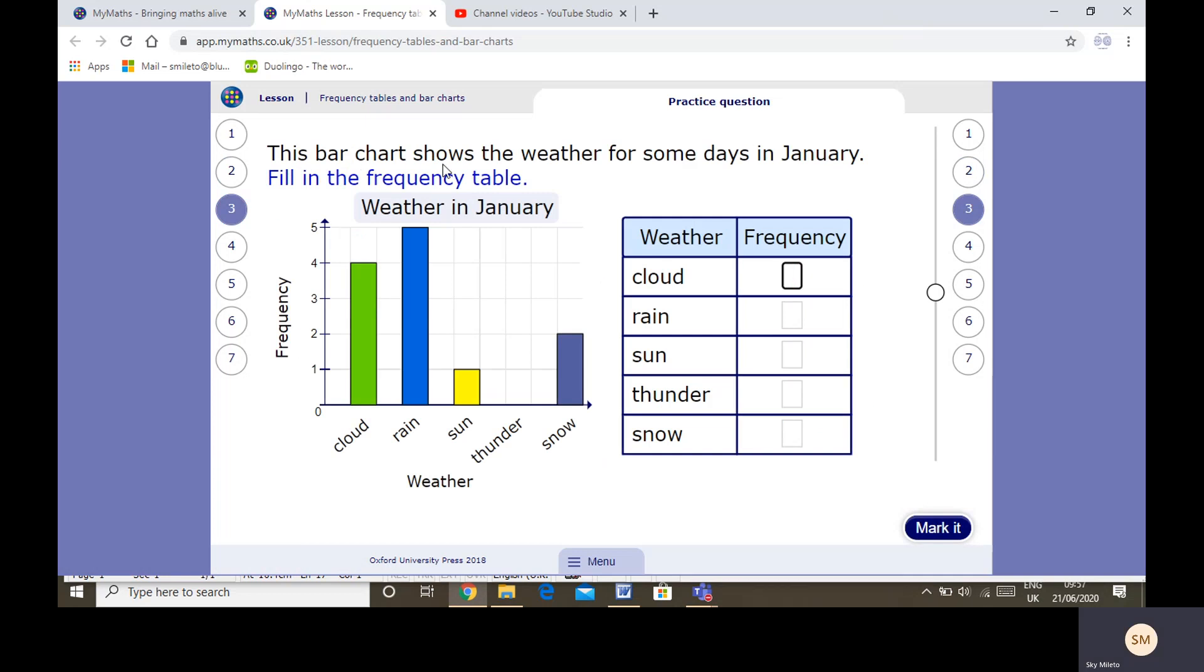So bar chart shows the weather for some days in January. How many days were cloudy? I'm looking at cloud, I'm looking up and I can see the frequency was 4. Rain, I can look up and see the frequency was 5. Sun, look up, frequency was 1. Thunder, now there doesn't seem to be a bar for thunder. What does that mean? That means that there were no days that there was thunder. Therefore I put in a 0.